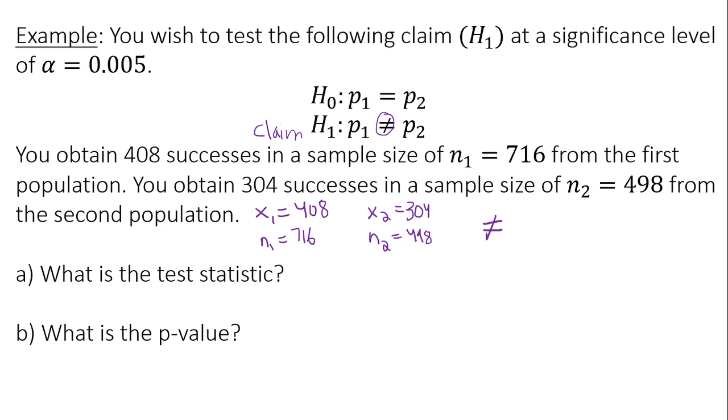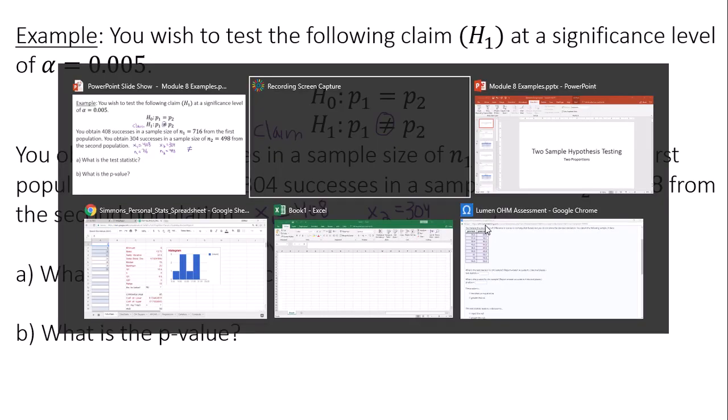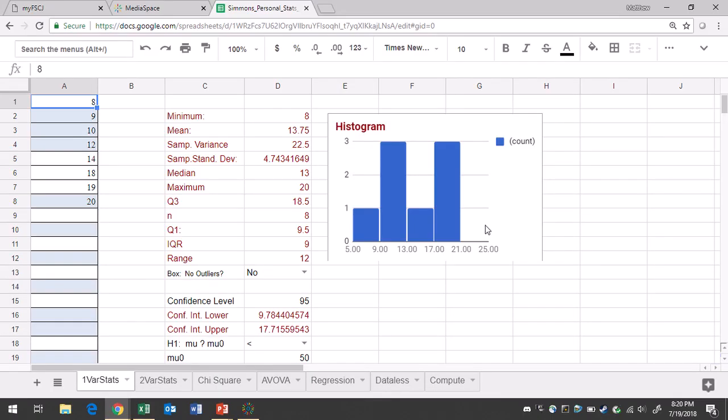So you're going to go to Google Sheets. Once you get to Google Sheets, you're going to go to the data list tab. So you'll go to the data list tab first,